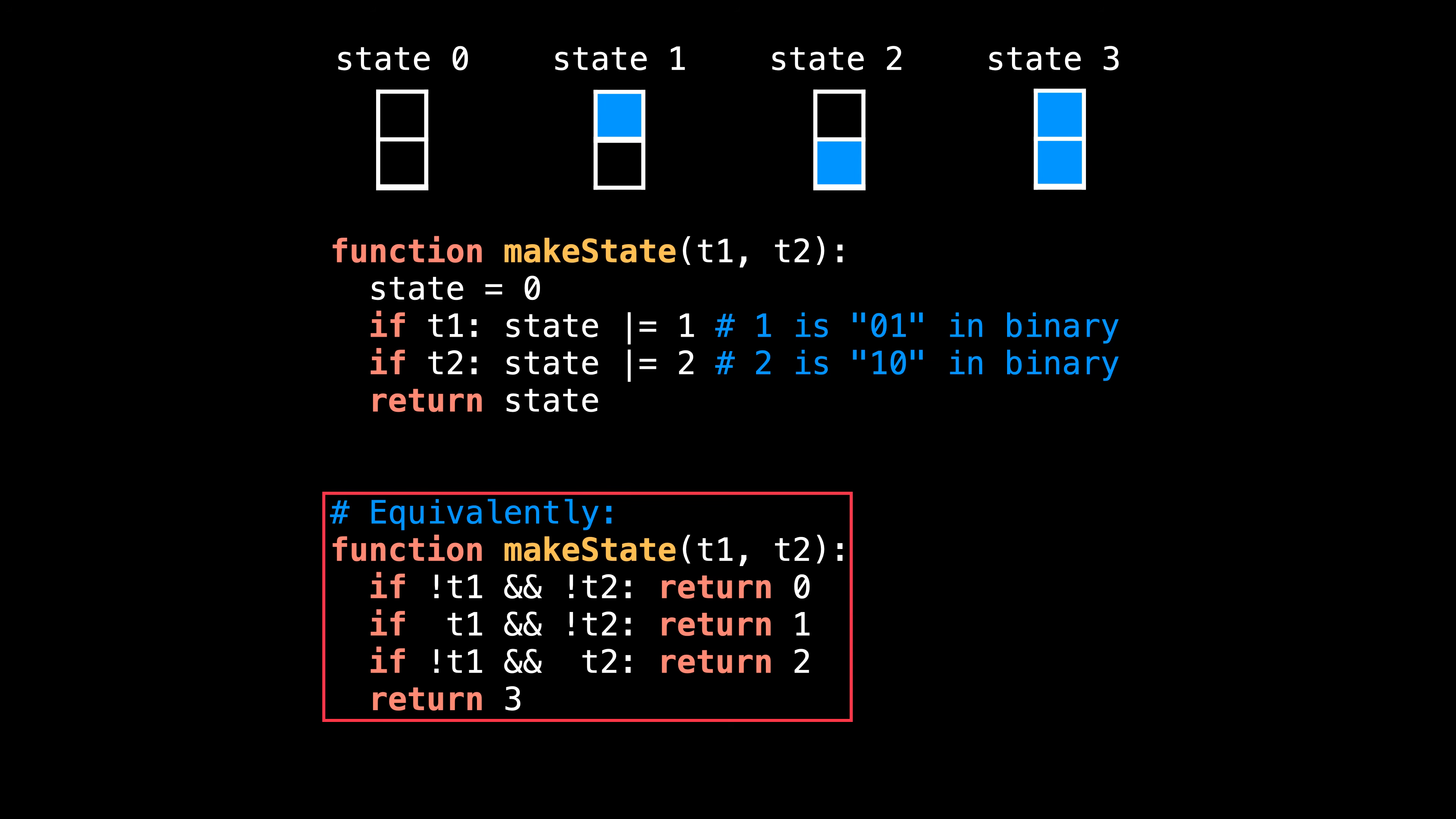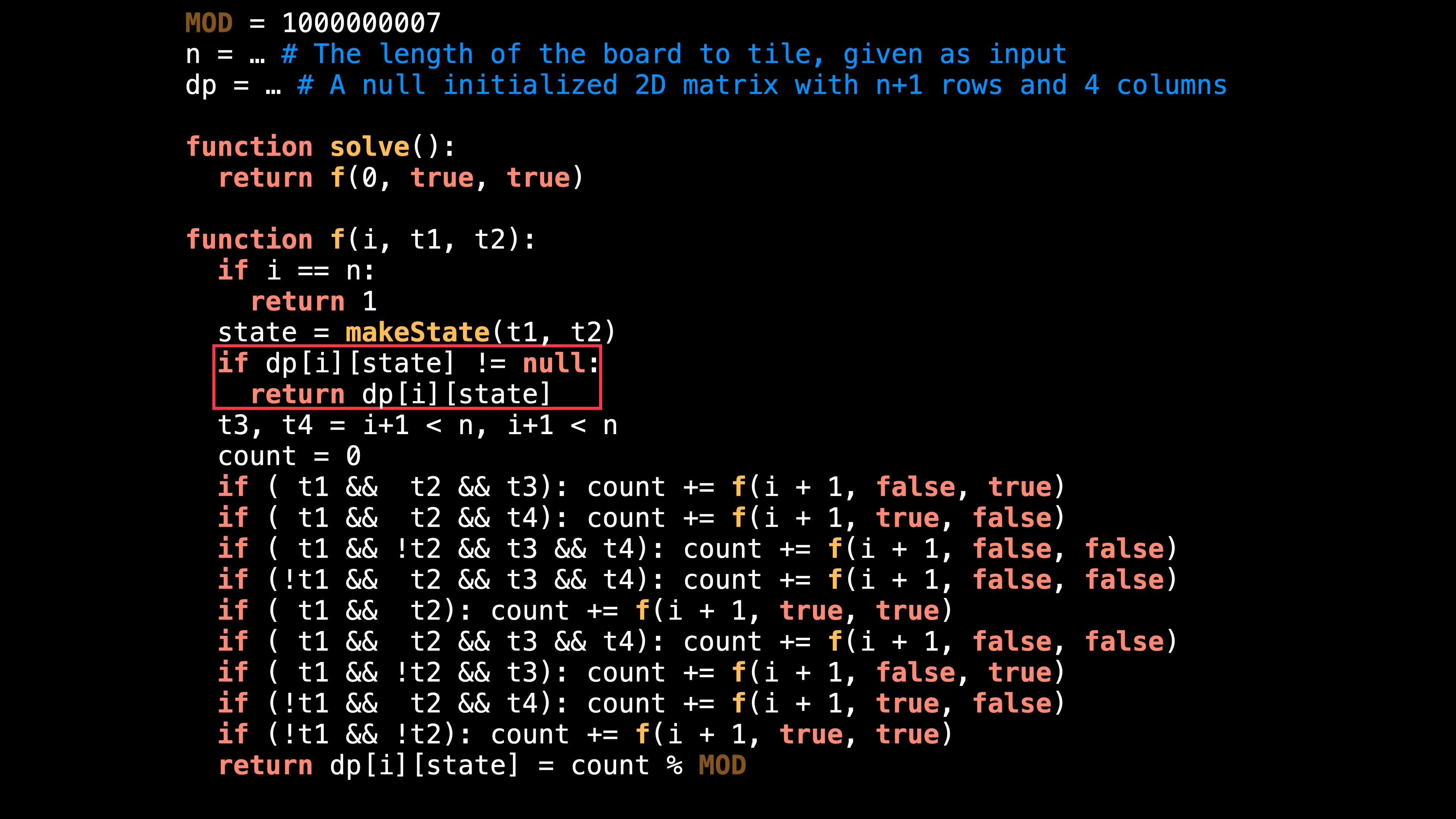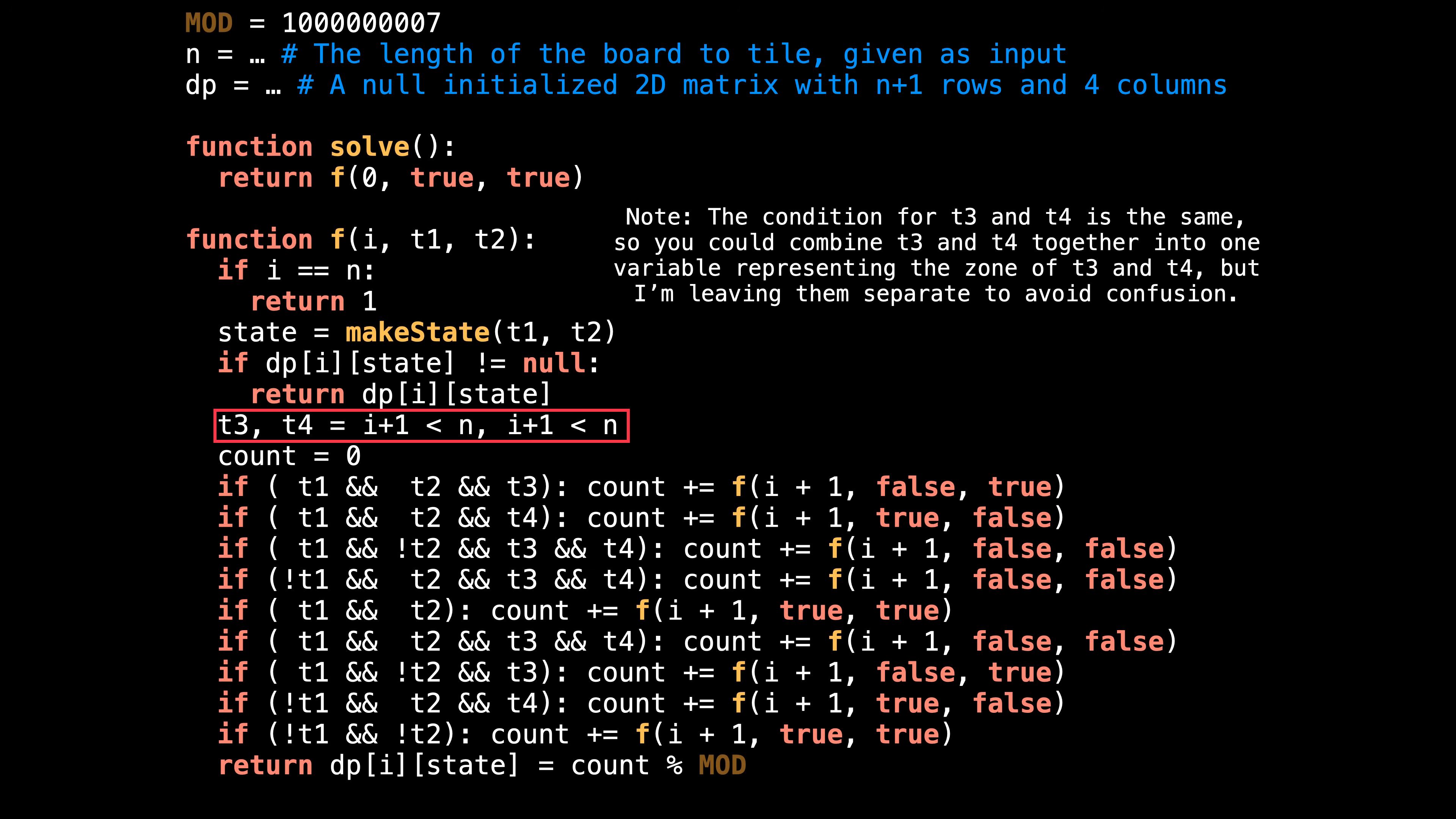If you are unfamiliar with bit manipulations, this second makeState function is another equivalent implementation which will encode a column state represented by t1 and t2 into a number. With the column state and the current index, we can check if we already know the number of ways to tile the current state. And if we do, then return that answer. This is the part that makes the recursive implementation a dynamic programming solution rather than a brute force. Because we are able to look up if we've already solved this particular subproblem and return the answer immediately. At this point, we're going to try and tile the board based on the current state.